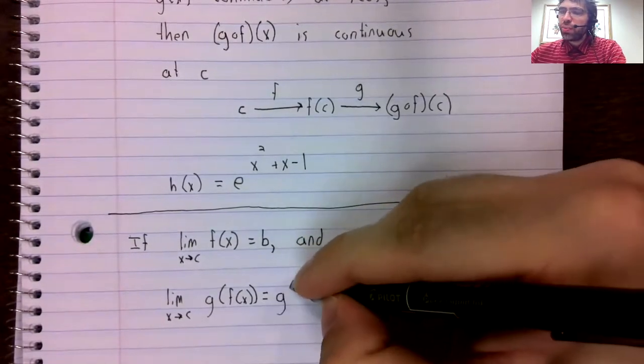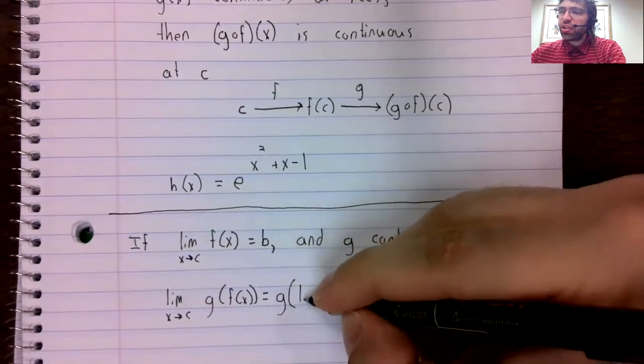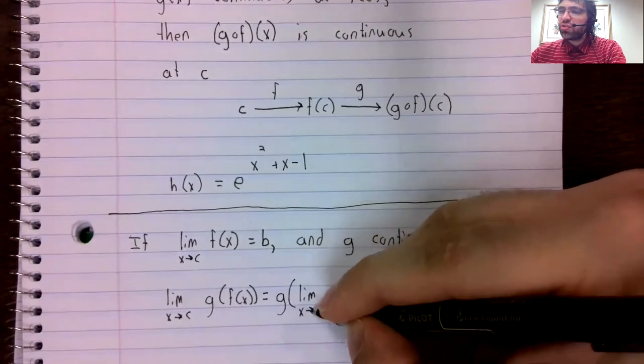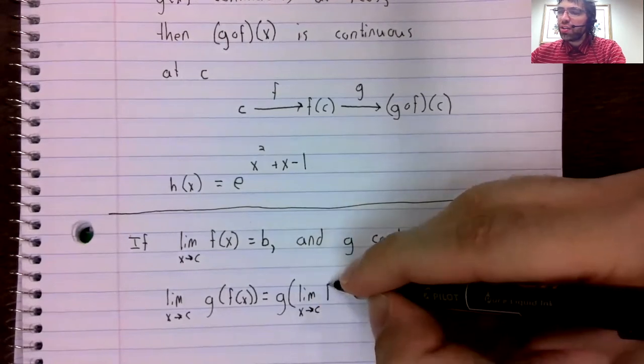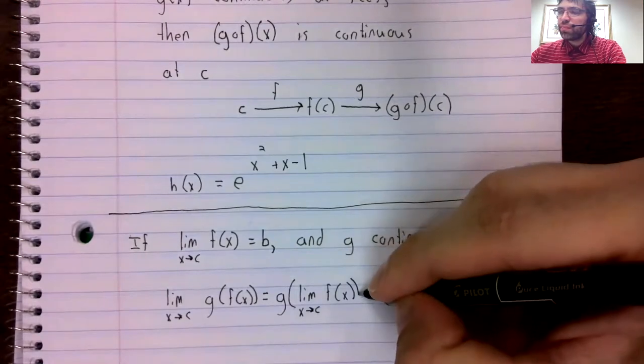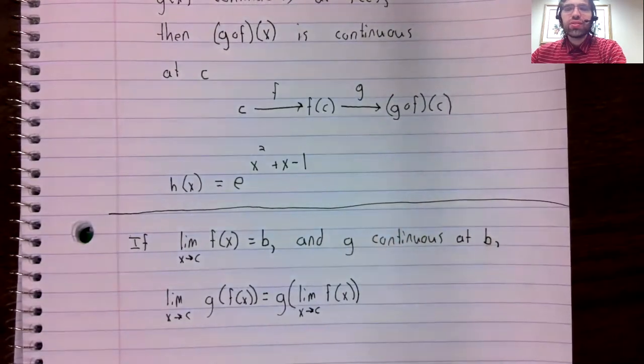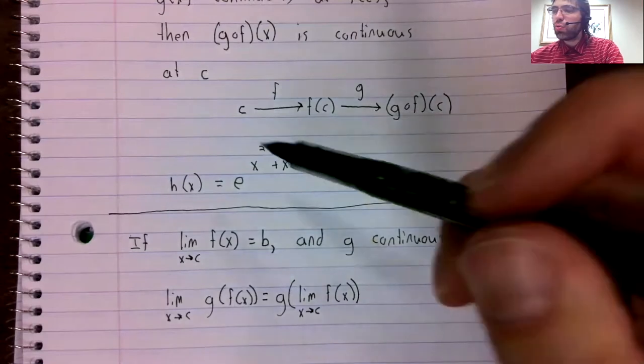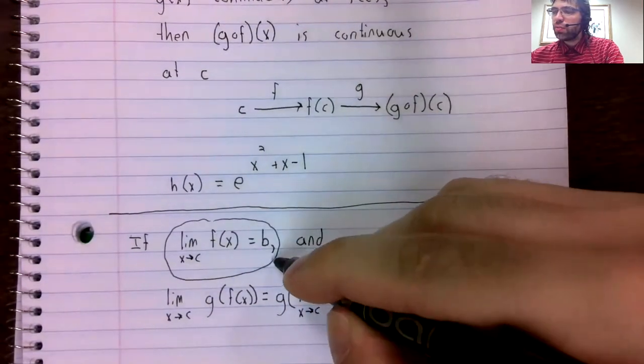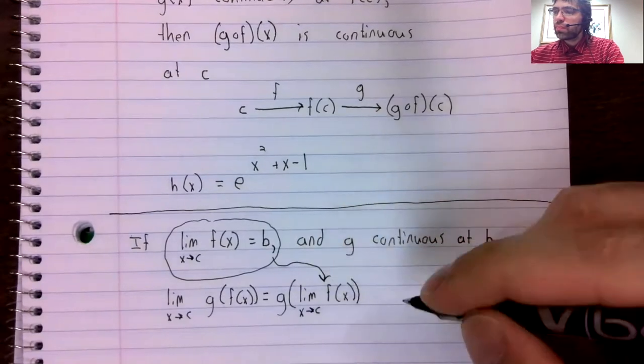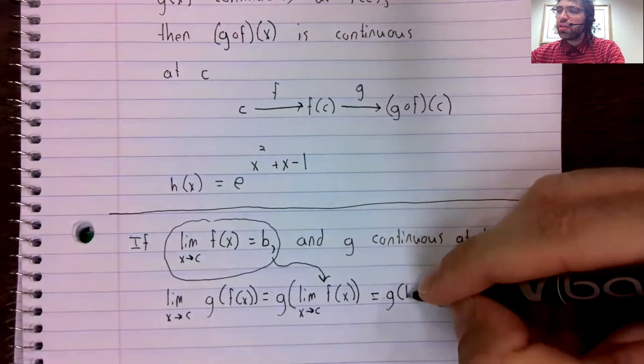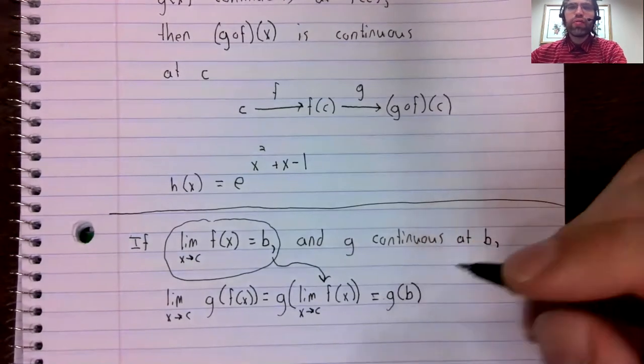What I meant when I said we could take the limit inside of the composition is that this equality holds. And now that is g of b.